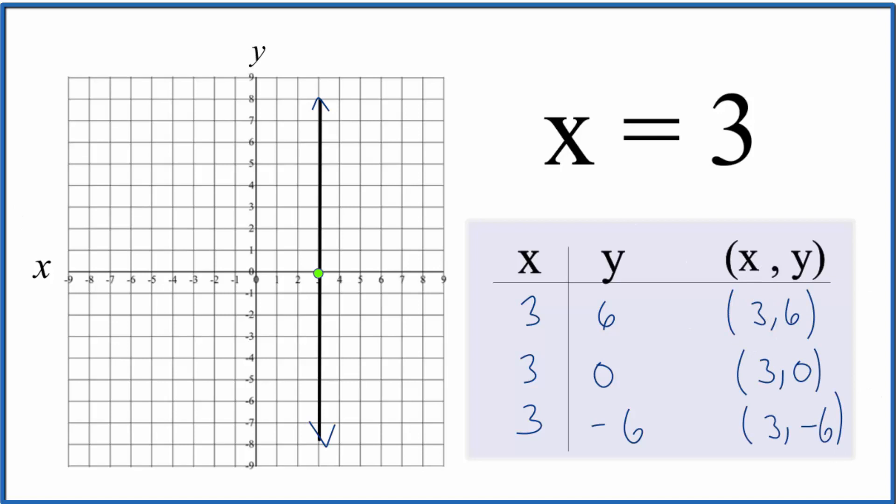So now when we graph them, we go x is 3, y is 6. We have x is 3, y is 0.